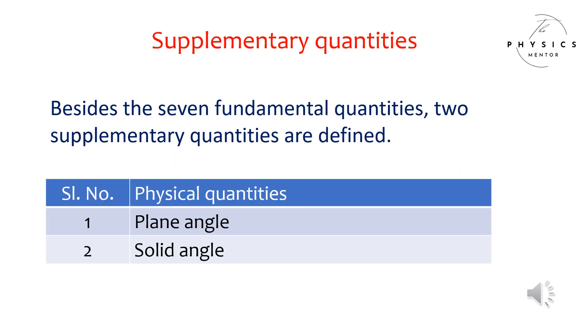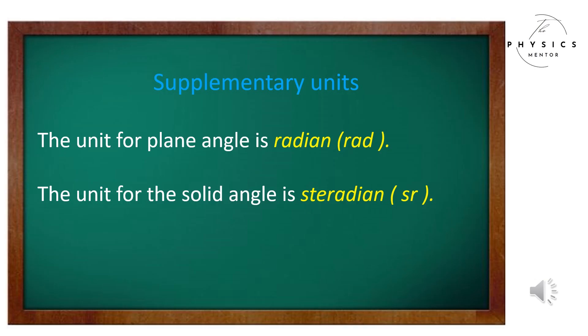Besides the seven fundamental quantities, two supplementary quantities are defined. They are for plane angle and solid angle. The unit for plane angle is radian, and the unit for the solid angle is steradian.